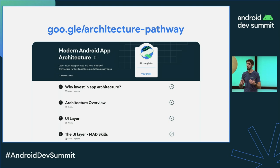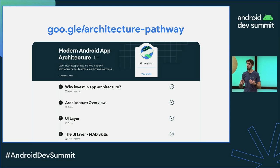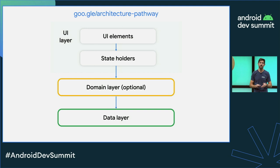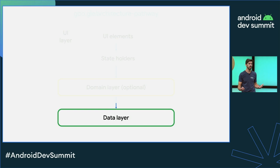This talk assumes some basic familiarity with the architecture and the UI layer, so if you need to get up to speed, check out our architecture pathway that contains a ton of information about this. As a quick recap, here's our recommended architecture. On the bottom of the hierarchy, we can find the data layer, which is going to expose application state to the rest of the hierarchy and contain the vast majority of business logic.